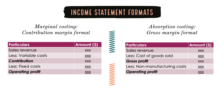Contribution is the difference between sales revenue and variable costs, and this tells us how much money a business is left with to pay the fixed costs. From contribution, we deduct all fixed costs to arrive at operating profit.